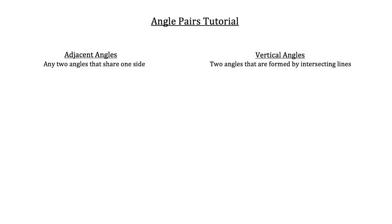Adjacent angles are any two angles that share one side. For example, take a look at angles 1 and 2 here. Angle 1 is composed of these two rays, these two sides right here. And angle 2 is composed of these two sides — this side in green and then this side that overlaps green and blue. So the side that they share is that green and blue side right there, and that makes them adjacent angles.